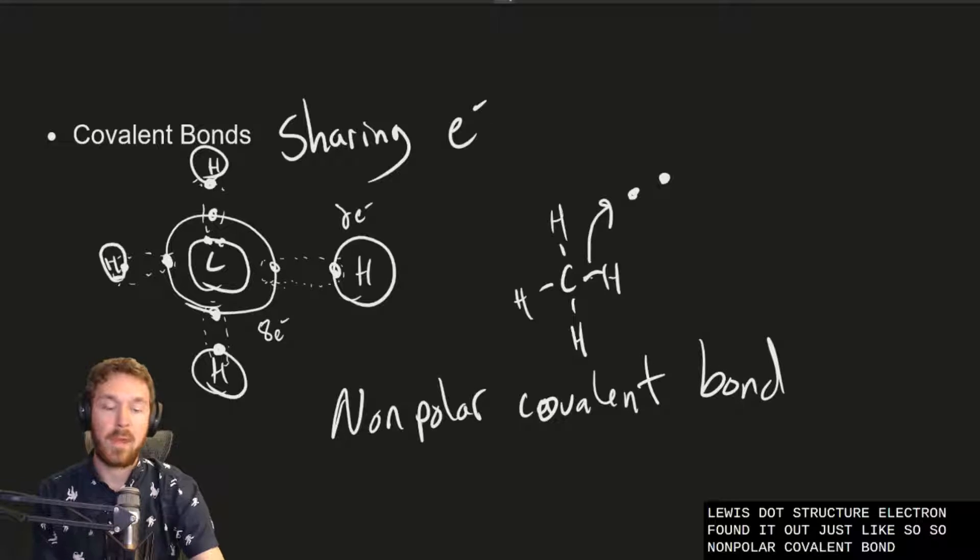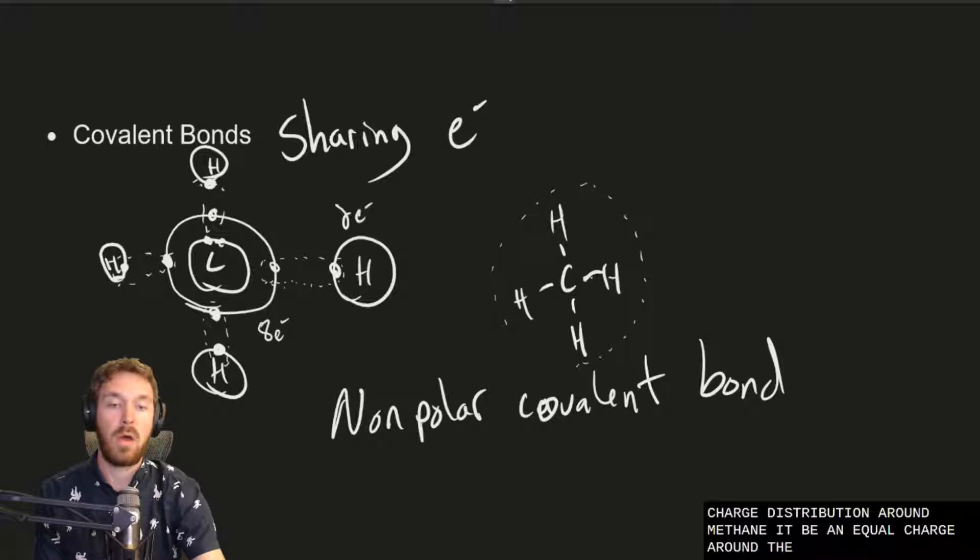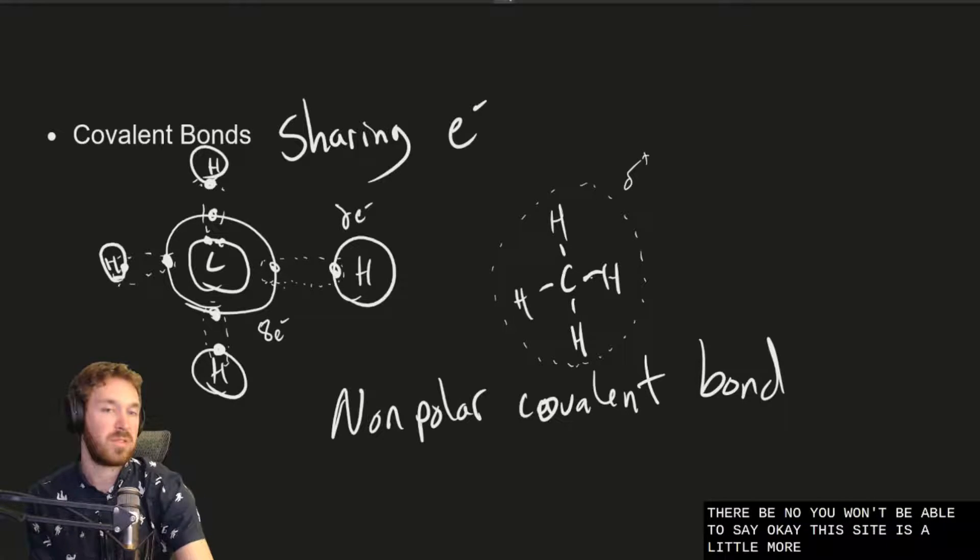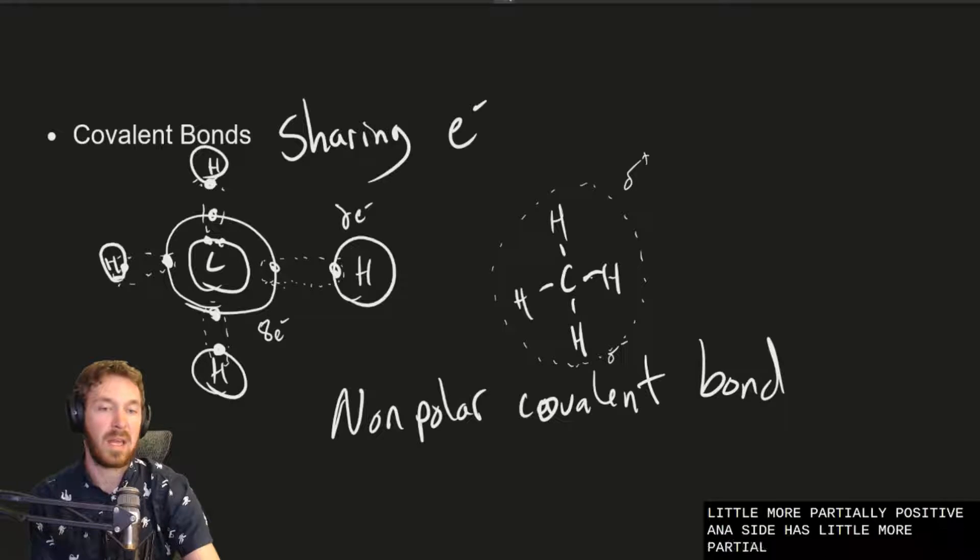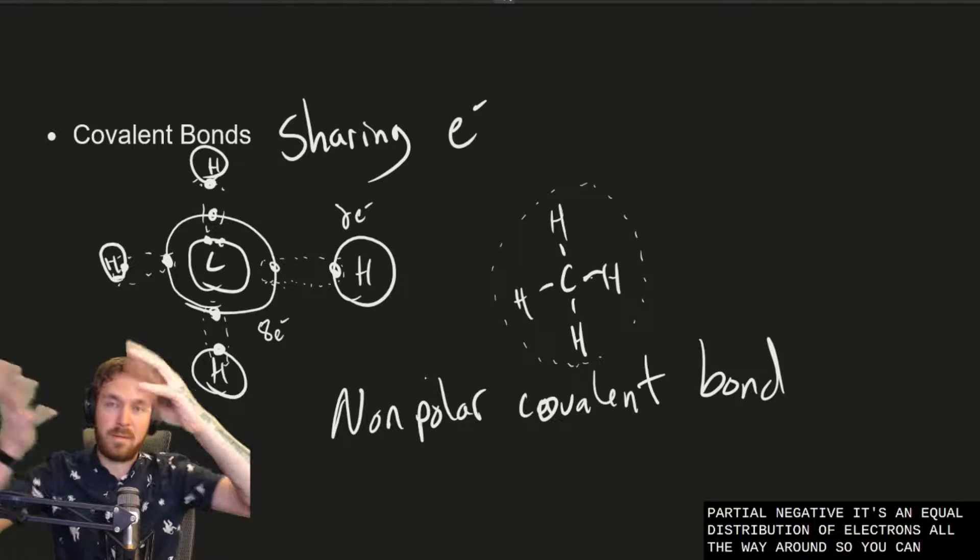So that if we were to draw the charge distribution around methane it'd be an equal charge around. There'd be no sidedness. There'd be no you wouldn't be able to say okay this side is a little more partially positive and this side is a little more partially negative. It's an equal distribution of electrons all the way around so you can't take an end.